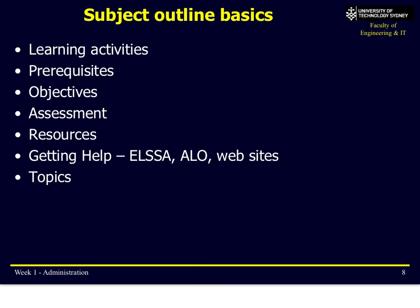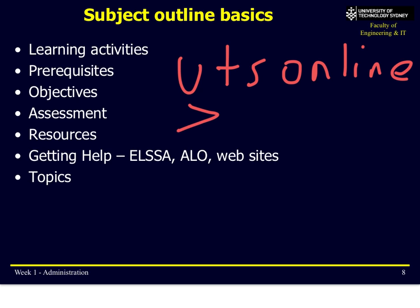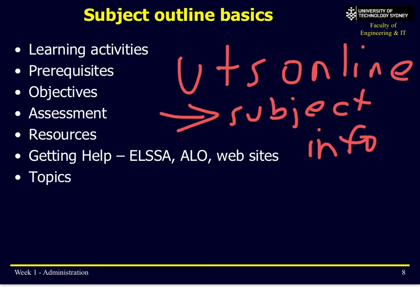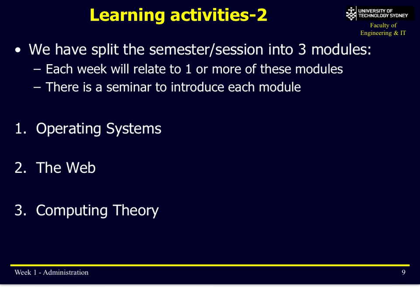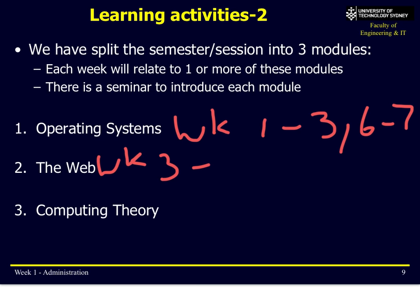I'm going to cover what's in our subject outline — this is a contract between you and me, and you can find it on UTS Online under Subject Information. We've broken this semester into three main sections: operating systems roughly in weeks one to three, plus a bit in weeks six and seven; the web from week three to about week five with an assignment due in week seven; and the rest from week eight onwards is computing theory.